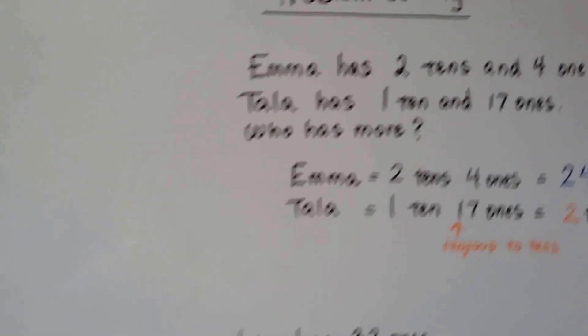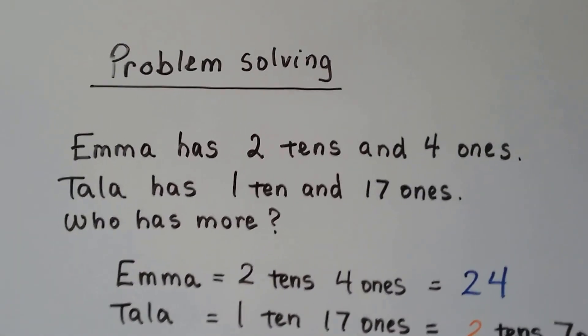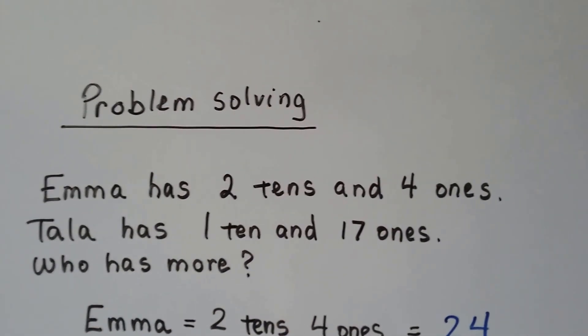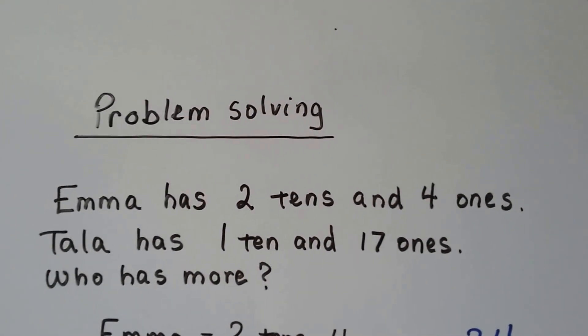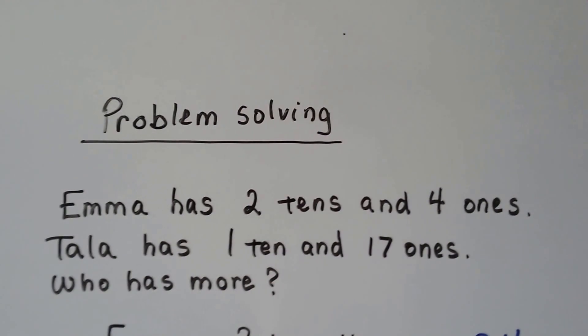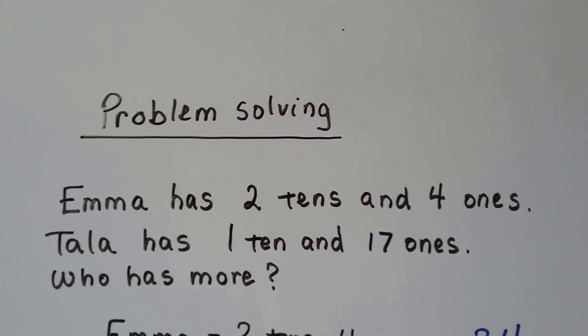Let's try some problem solving. Emma has 2 tens and 4 ones. Tala has 1 ten and 17 ones. Who has more?